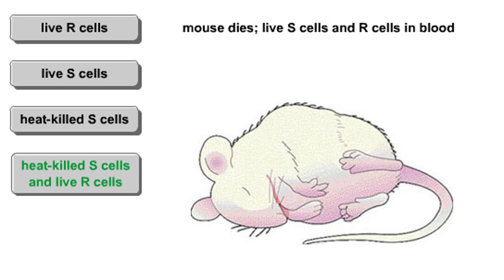Heat killed the S cells but did not destroy their hereditary material. Somehow, that material was transferred from the dead S cells to living R cells.